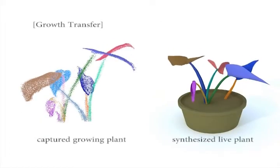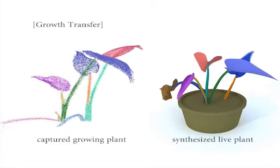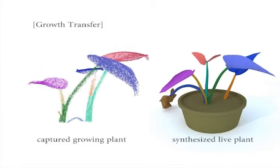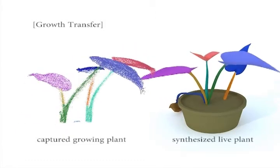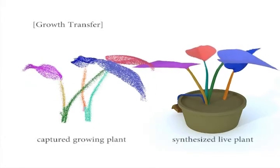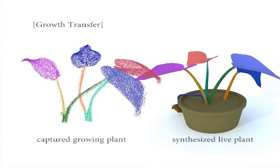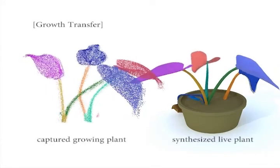Manually creating dynamic plants with both growth and motion is very tedious work for artists. Here we demonstrate another application where a digital plant model is brought to life by, or synthesized from, a real growth sequence, encoding organs extracted and tracked by our algorithm. Distinctive colors indicate corresponding organs.